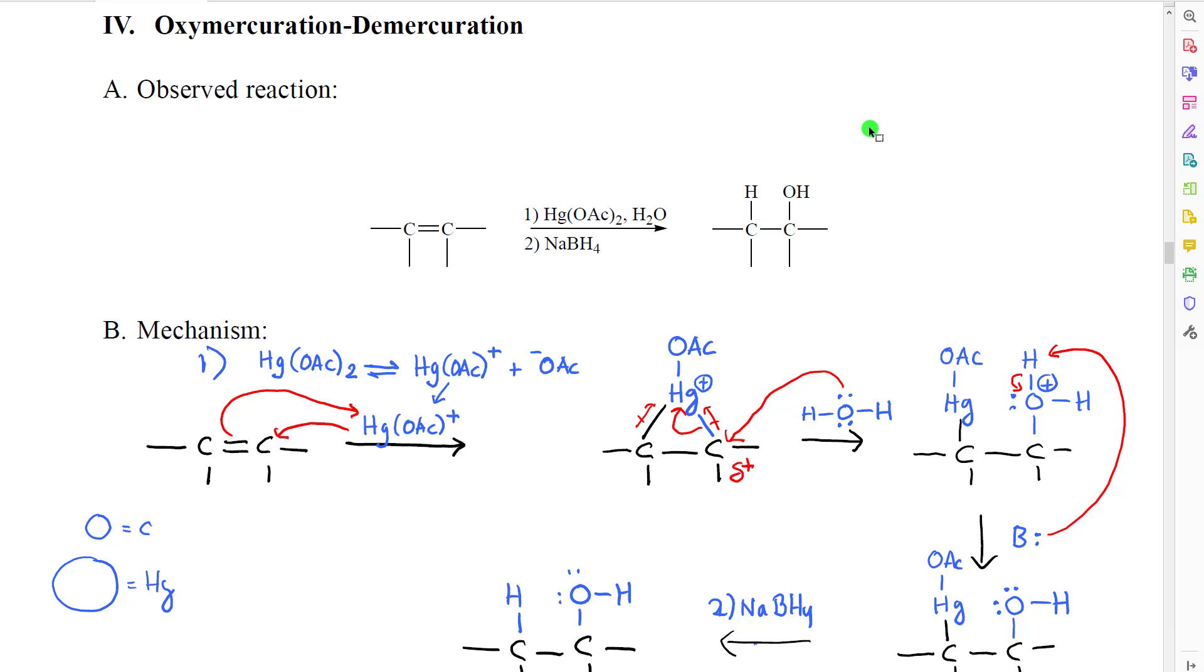Our next hydration reaction has sort of a mouthful of a name. It's called oxymercuration-demercuration. This was discovered in the 1950s at a time when they had begun to name reactions according to the structural changes that were being observed rather than naming them after people or other non-informational things. Our observed reaction looks like this. We take an alkene.